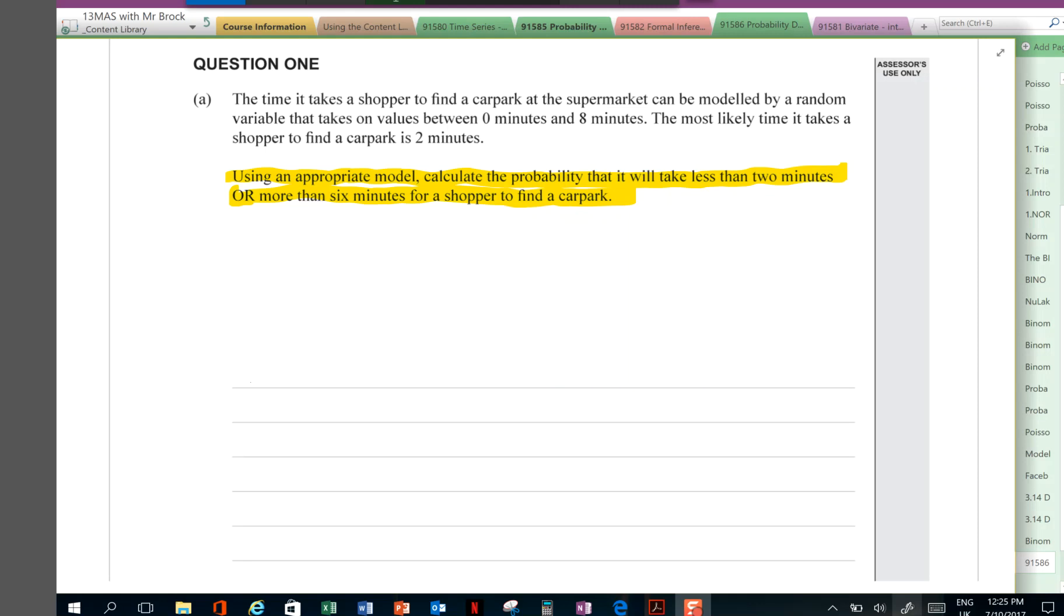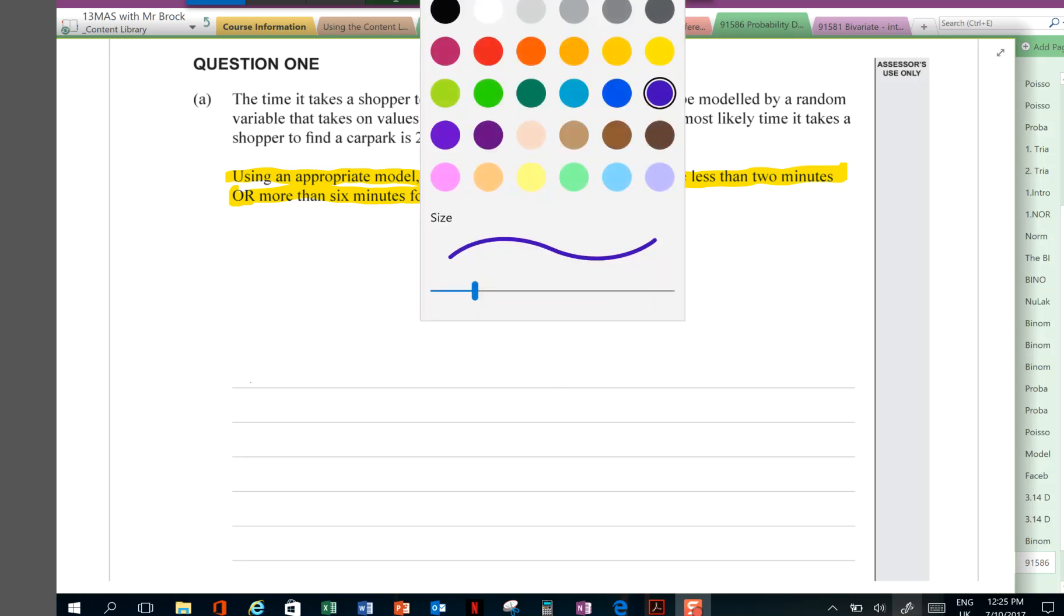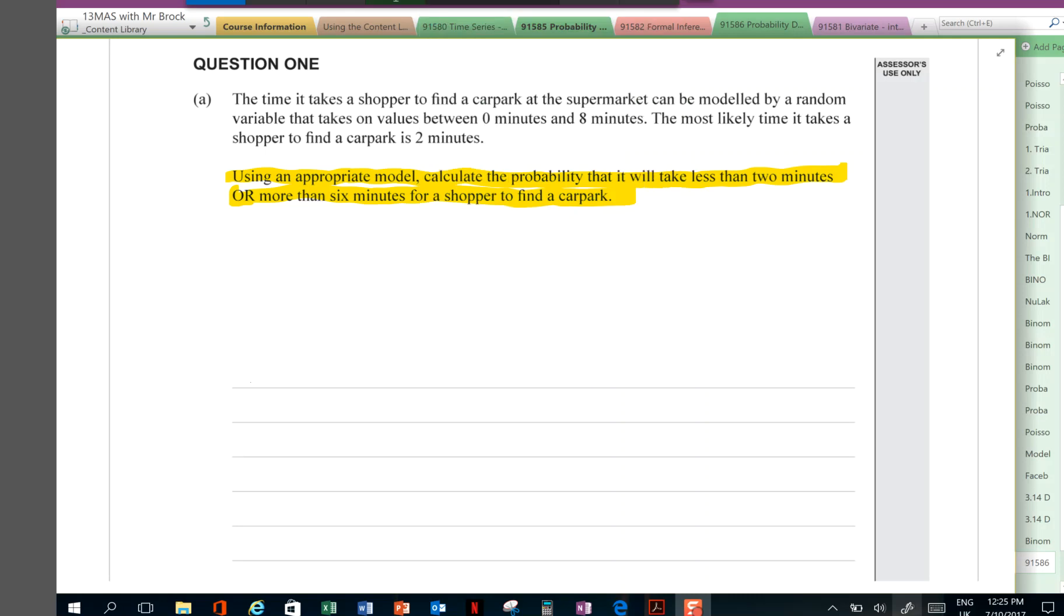So, let's keep reading. We're told the time it takes a shopper to find a car park at the supermarket can be modeled by a random variable that takes on values between zero minutes and eight minutes. The most likely time it takes a shopper to find a car park is two minutes.